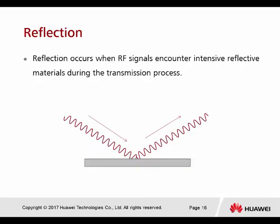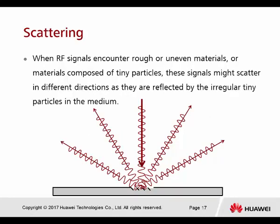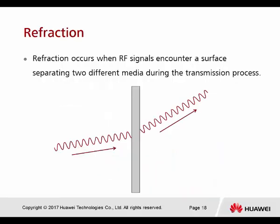Next is refraction, which occurs when a radio frequency signal encounters an intensely reflective material that does not allow the signal to pass through — the radio wave is refracted to another angle. Then there is scattering: when the signal encounters rough, uneven material or material composed of tiny particles, it scatters in different directions as it is refracted by irregular tiny particles in the medium.